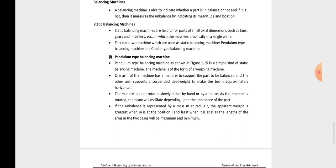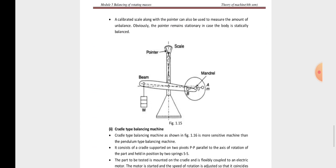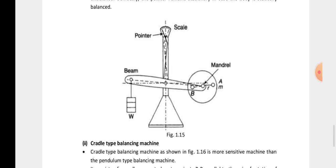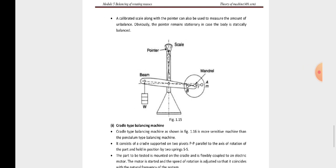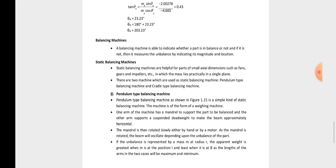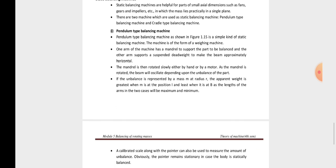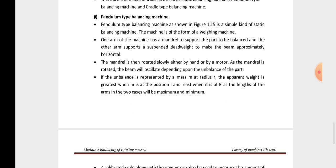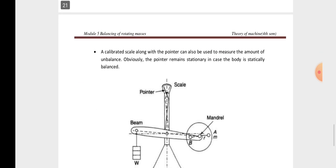The two types are: first, pendulum type, and second, cradle type. In the pendulum type, the figure shows a mandrel, scale, pointer, and beam with a mass attached and a vertical scale. It is a simple kind of static balancing machine in the form of a weighing machine. One arm has a mandrel to support the part to be balanced, and the other arm supports a suspended counterweight to keep the beam approximately horizontal.